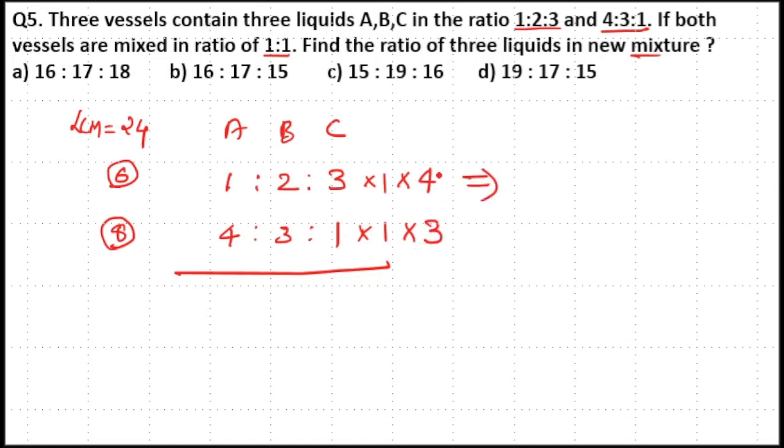That means 4 into 1 is 4, 4 into 2 is 8, 4 into 3 is 12. Second ratio becomes 3 into 4 is 12, 3 into 3 is 9, 3 into 1 is 3.